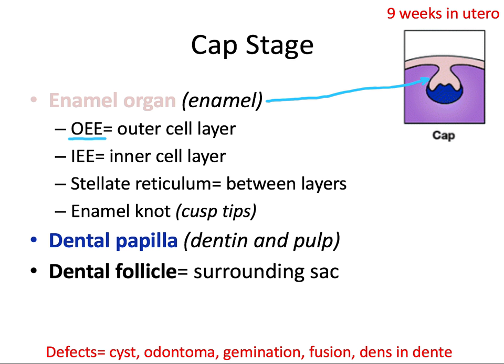Next is the inner enamel epithelium, which is the inner cell layer. Then we have the stellate reticulum, which are the cells between the OEE and the IEE. And finally we have the enamel knot — these little areas of focal thickening along the inner enamel epithelium that eventually determine where the cusp tips will be. They're also the signaling centers for the developing tooth.